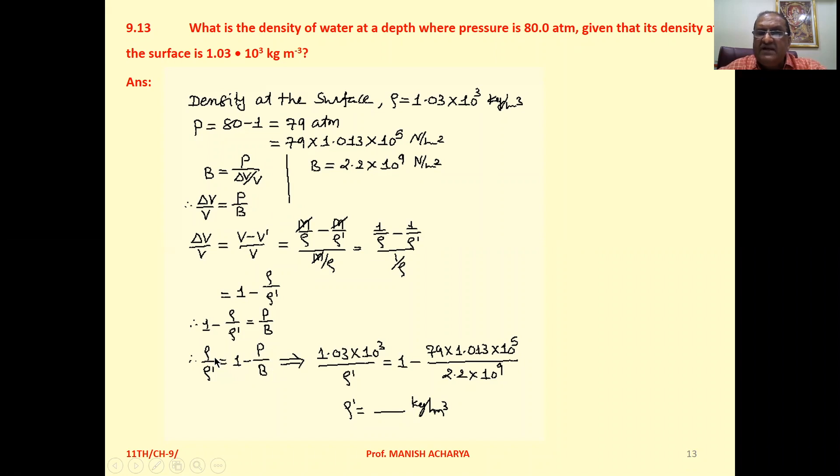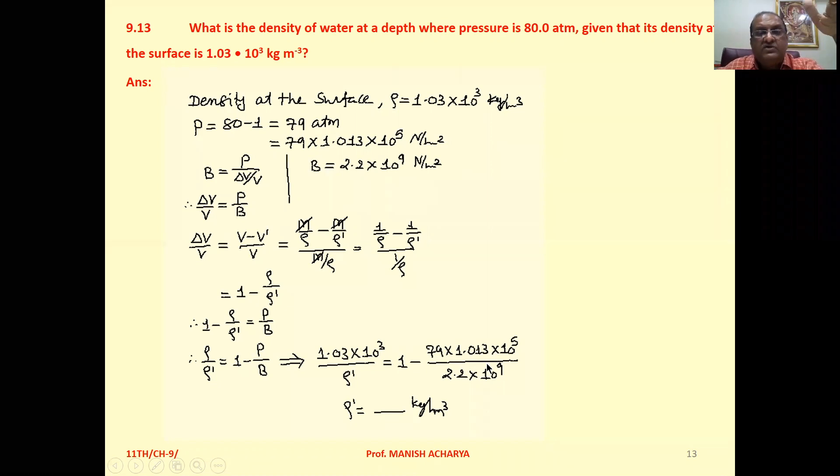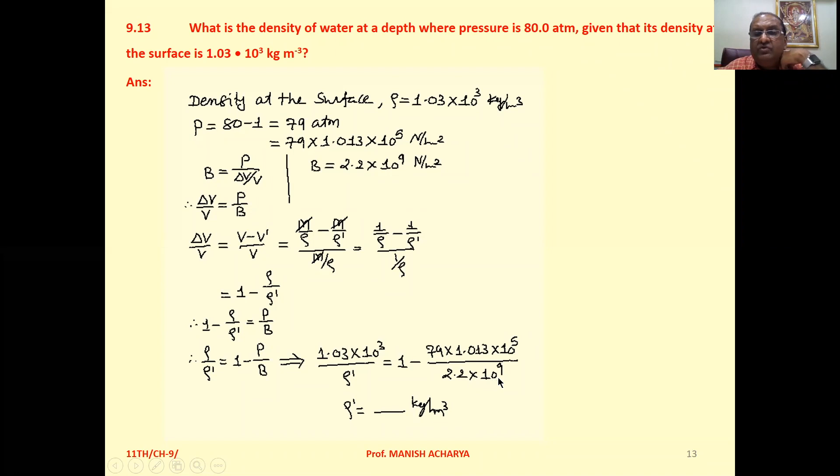Now rho, density at the surface, is given to you: 1.03 times 10 raised to 3 over rho dash which we want to calculate. That equals 1 minus pressure 79 times 1.013 times 10 raised to 5 divided by bulk modulus 2.2 times 10 raised to 9.